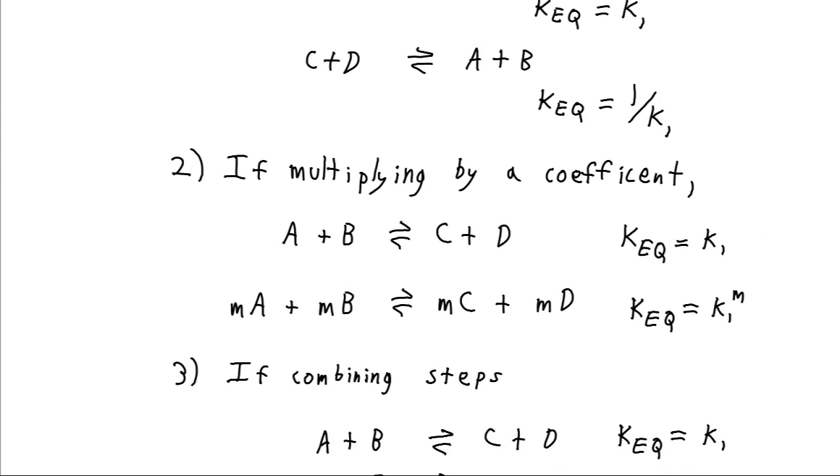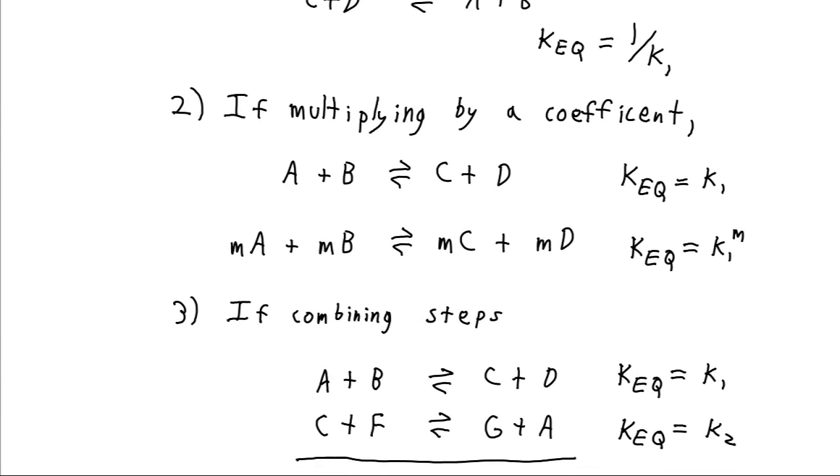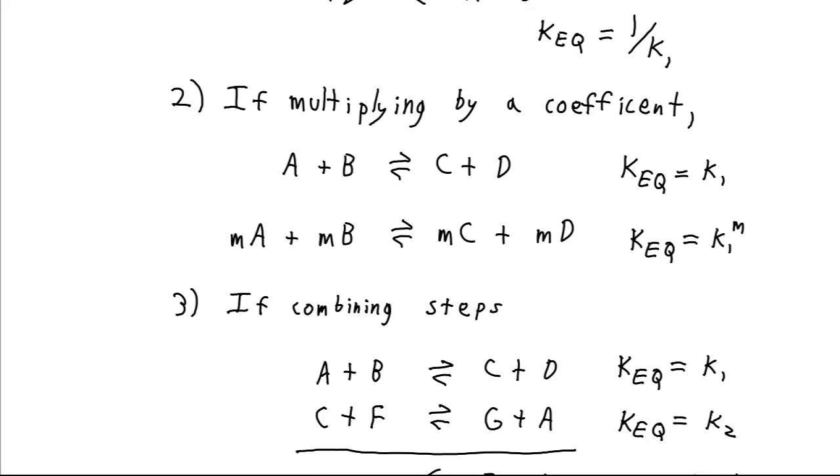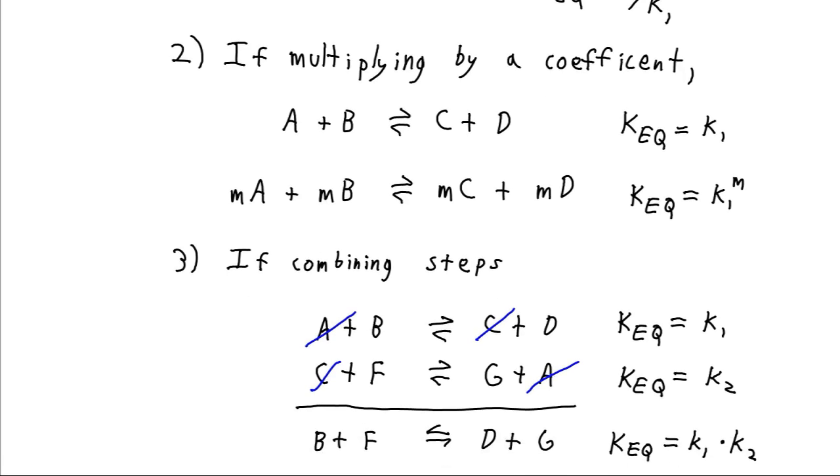Now if we want to combine our steps, what we are going to do is, first of all, you can think of this as adding regular polynomial equations where we have x's and y's and stuff. In that case, substances which appear on the left and the right are going to cancel out. So this is plus x on the left, plus x on the right, just subtract x from both sides. We can do that with our substance C and our substance A. So our overall reaction here is B plus F gives us D plus G.